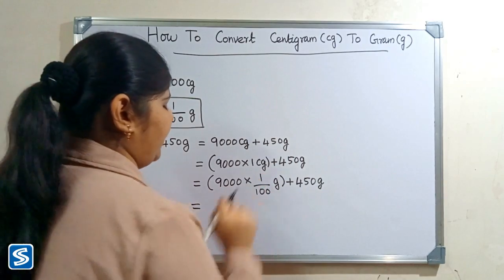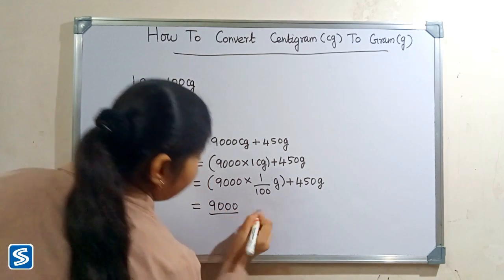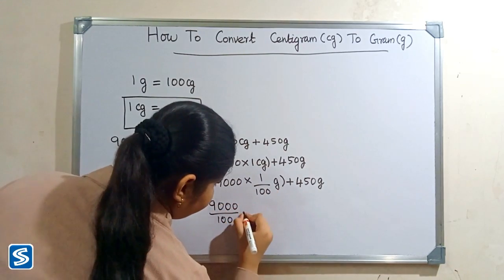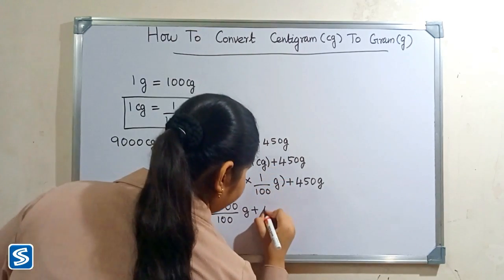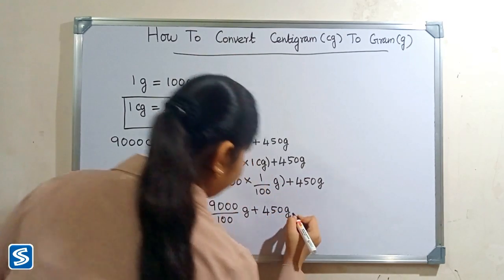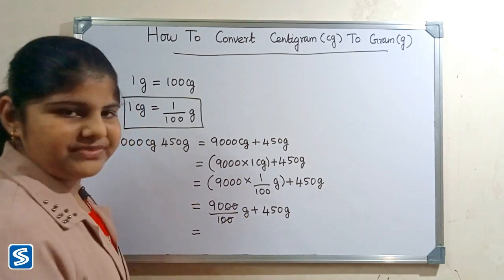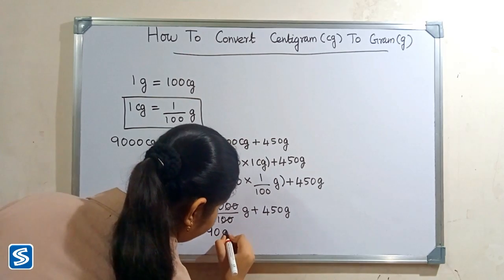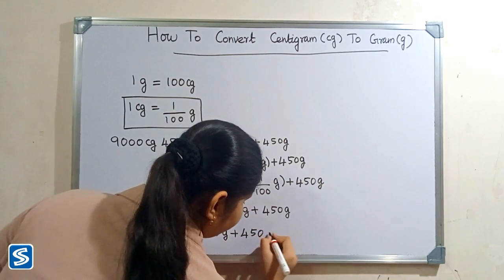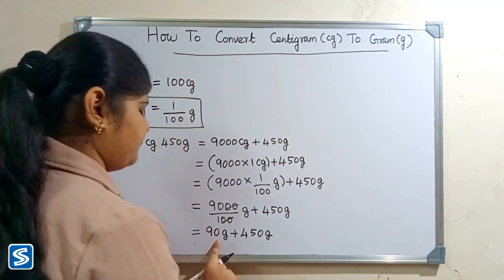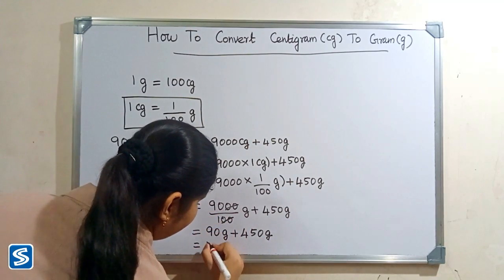9,000 multiply one will be 9,000, so 9,000 by 100 grams plus 450 grams. Here zero and zero gets cancelled, so 90 grams plus 450 grams. 90 grams plus 450 grams will be 540 grams.